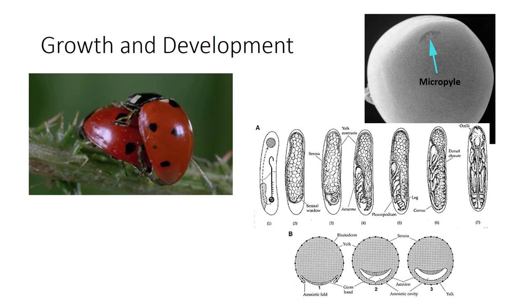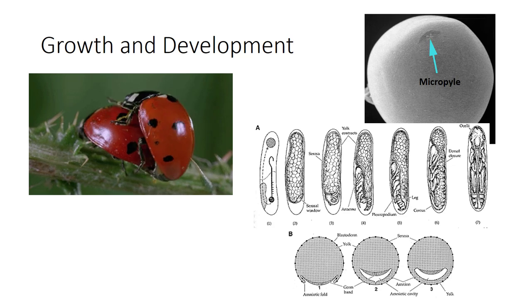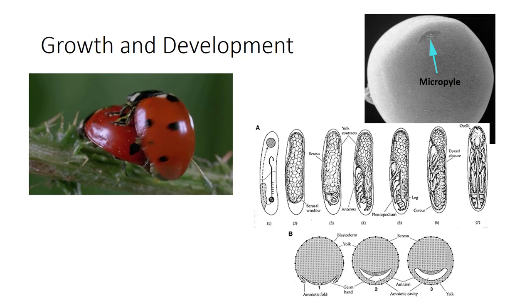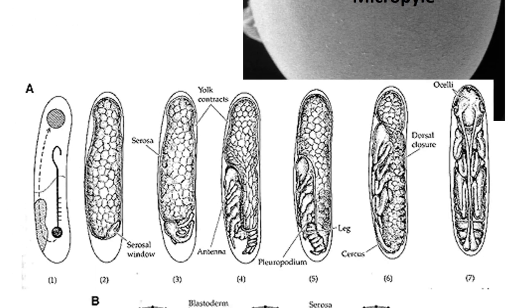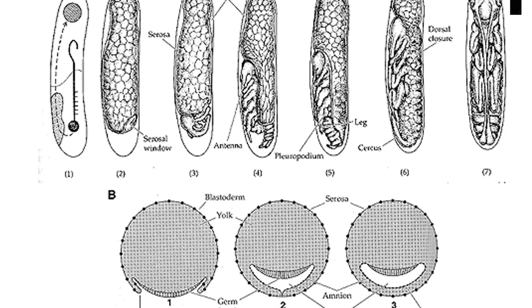Let's start at the beginning. When it comes to fertilization, the sperm enters the egg through the micropyle and fuses with the nucleus of the egg to form a zygote. The zygote undergoes cell division to form a blastula. Then the embryo develops from a germ band, which becomes all the parts of an insect.